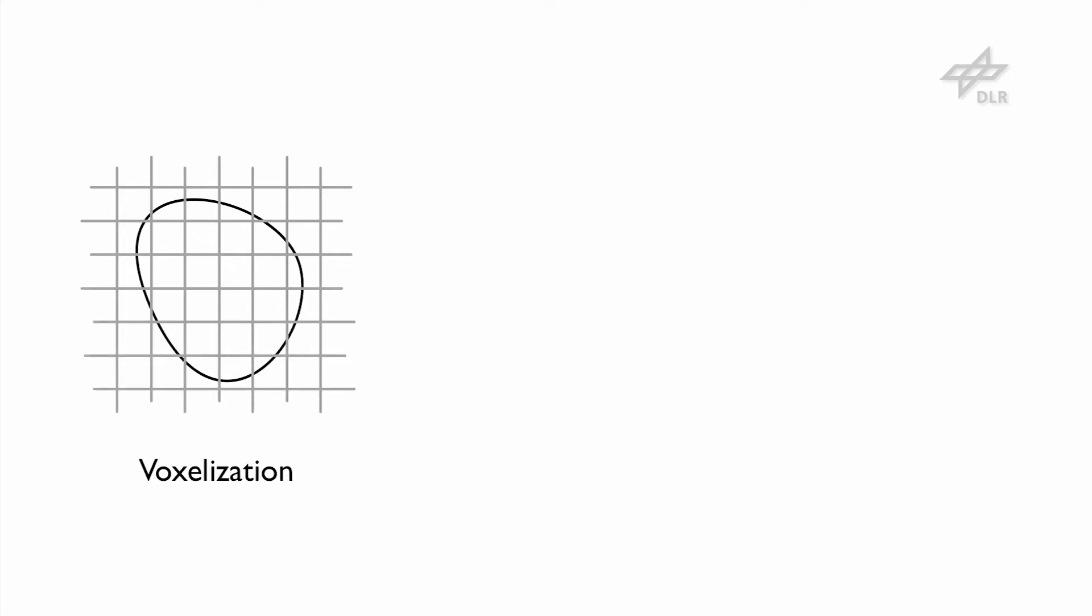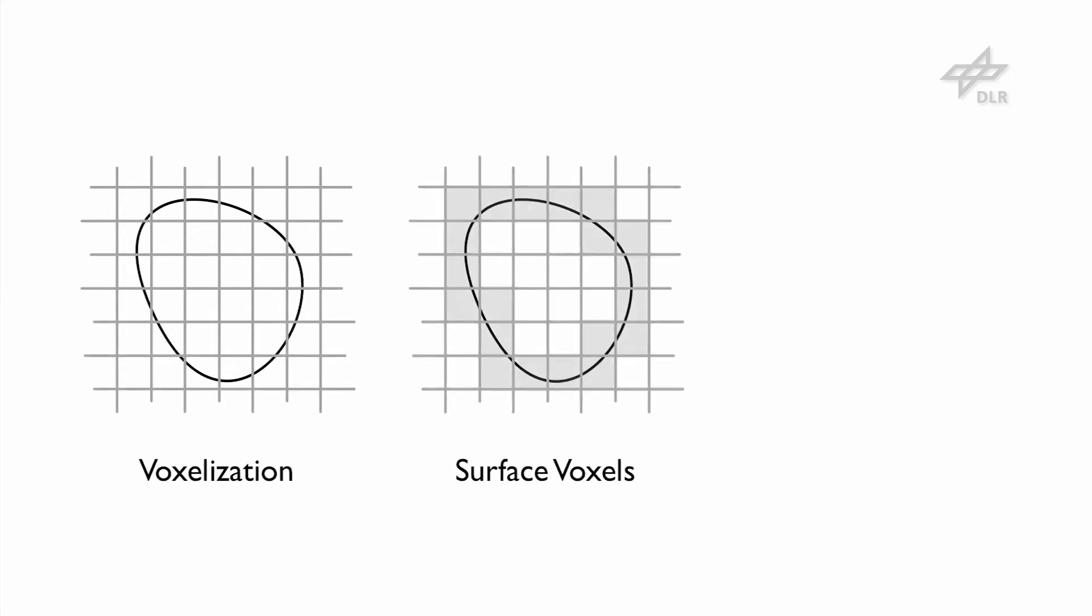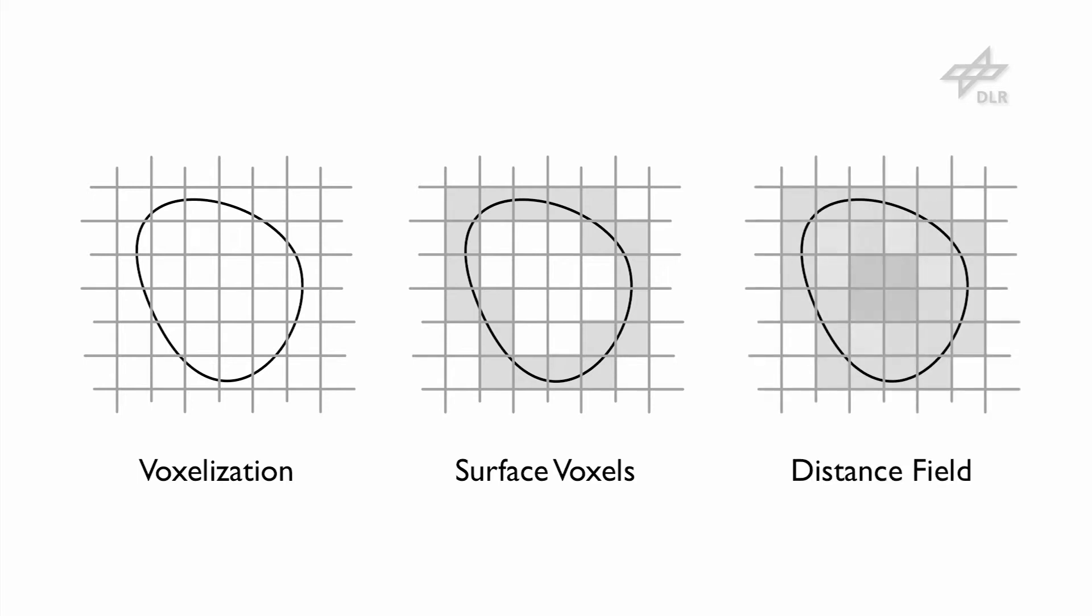In order to generate a voxel map, first the original object is set into a 3D grid. Second, the set of voxels that collides with the surface is detected. And finally, the Euclidean distance from each voxel center to the object surface is stored in each voxel.